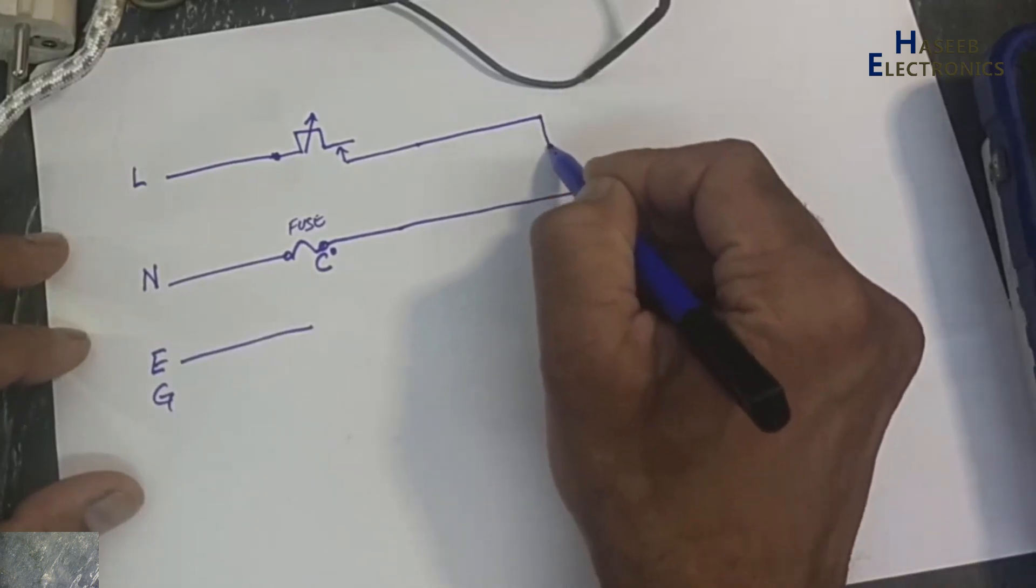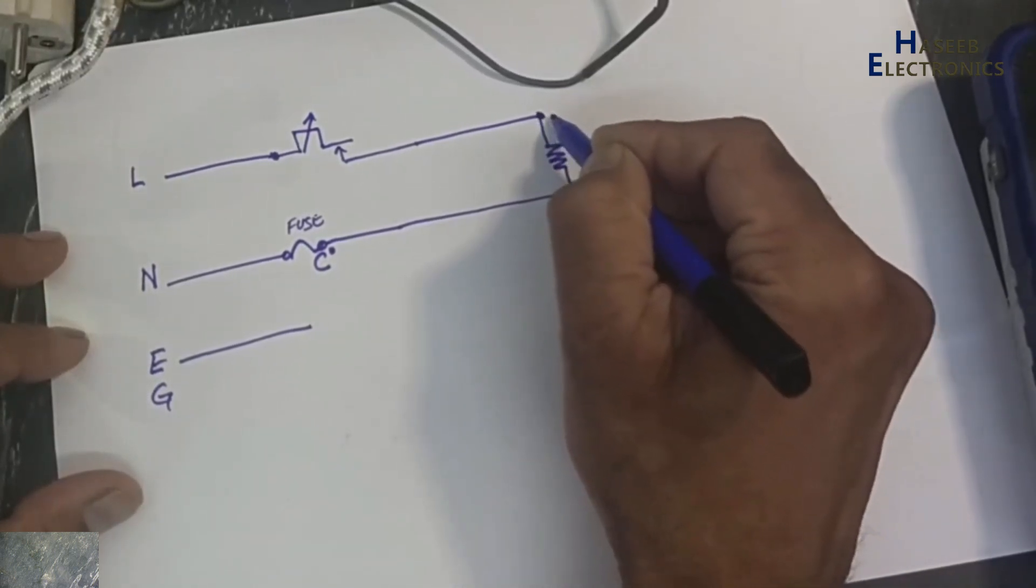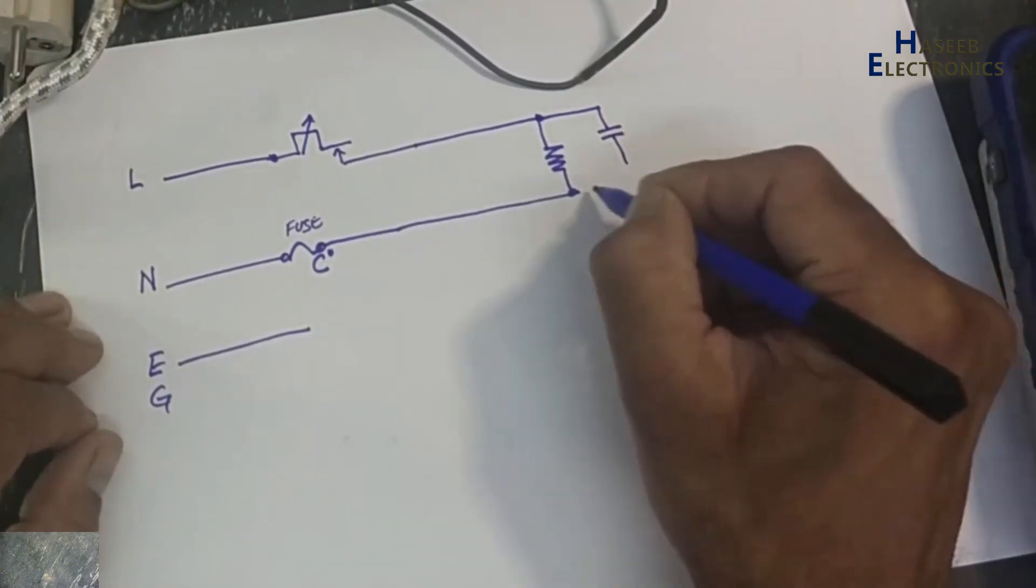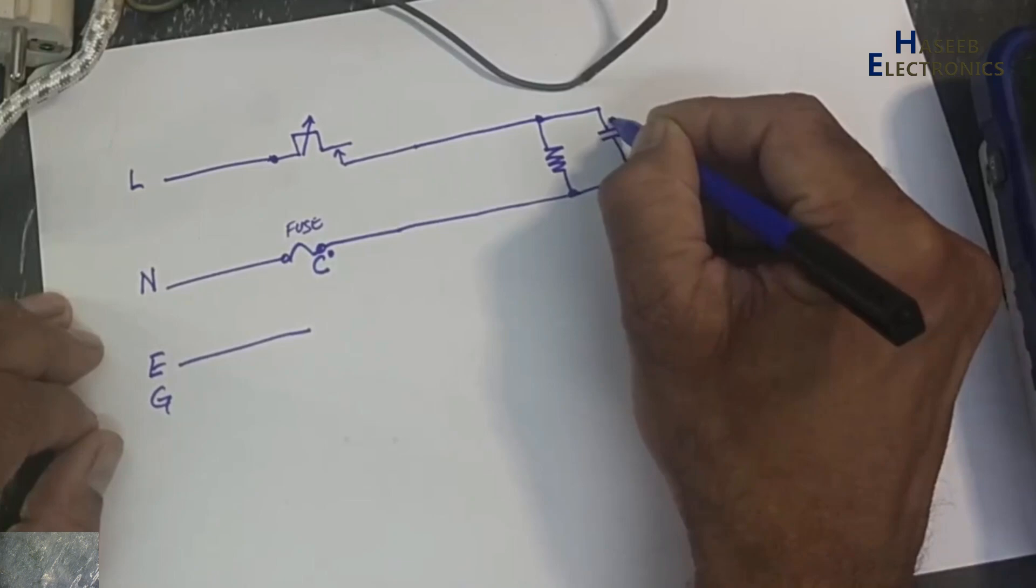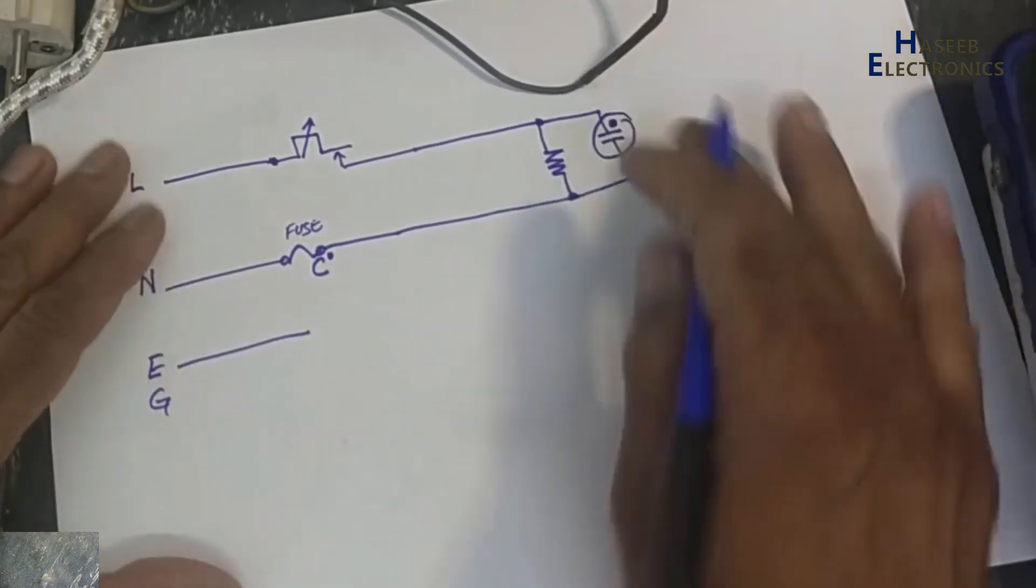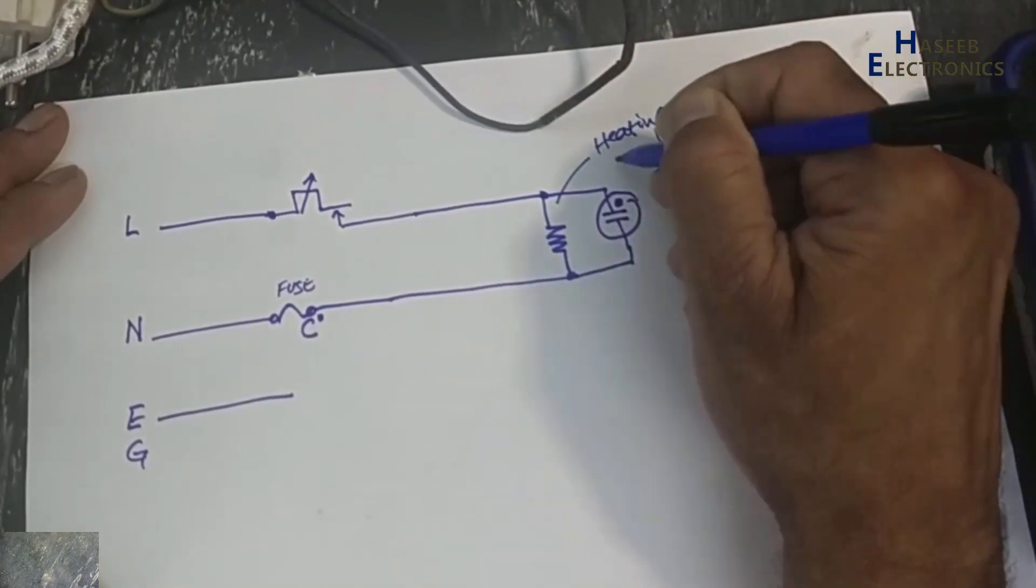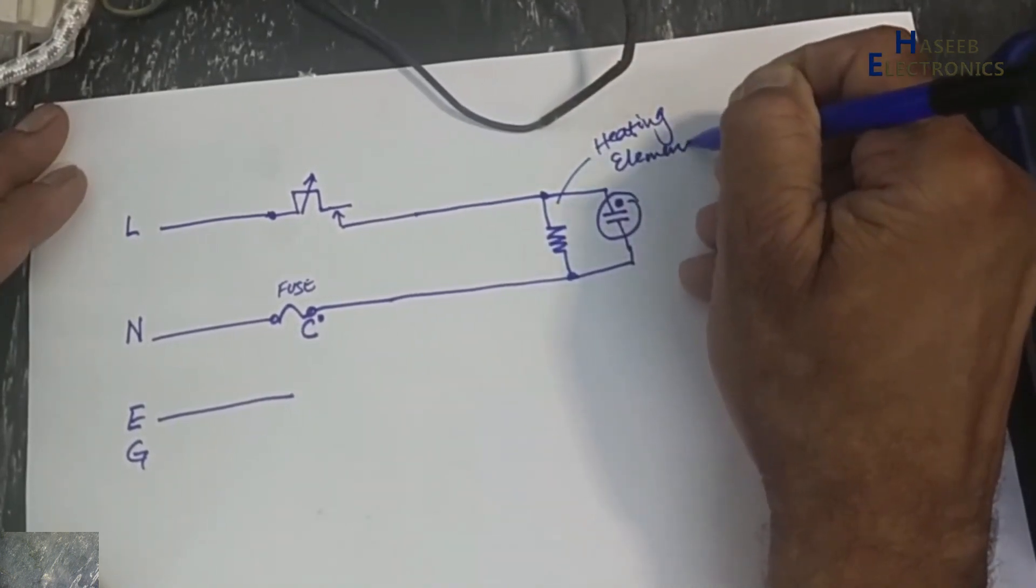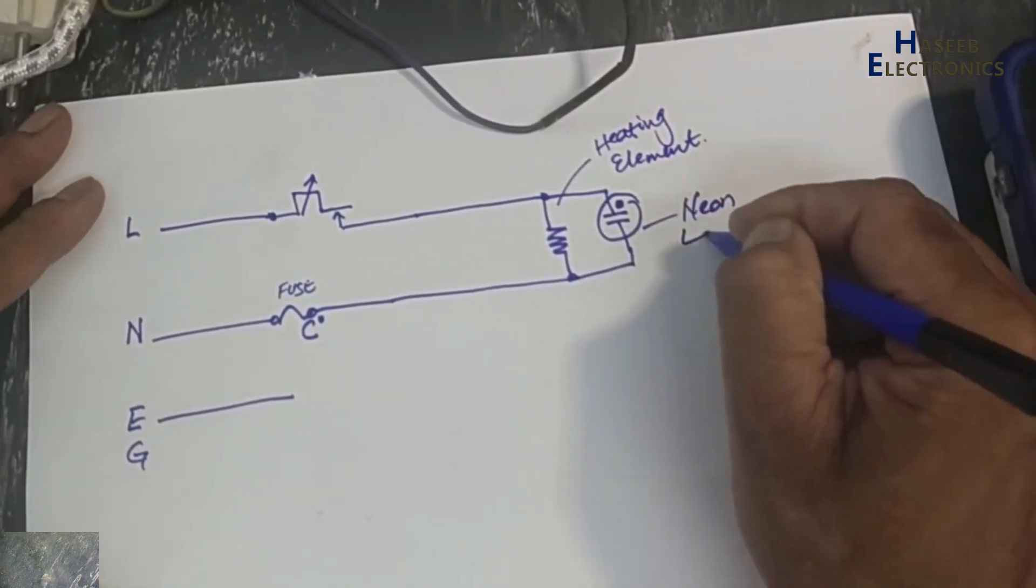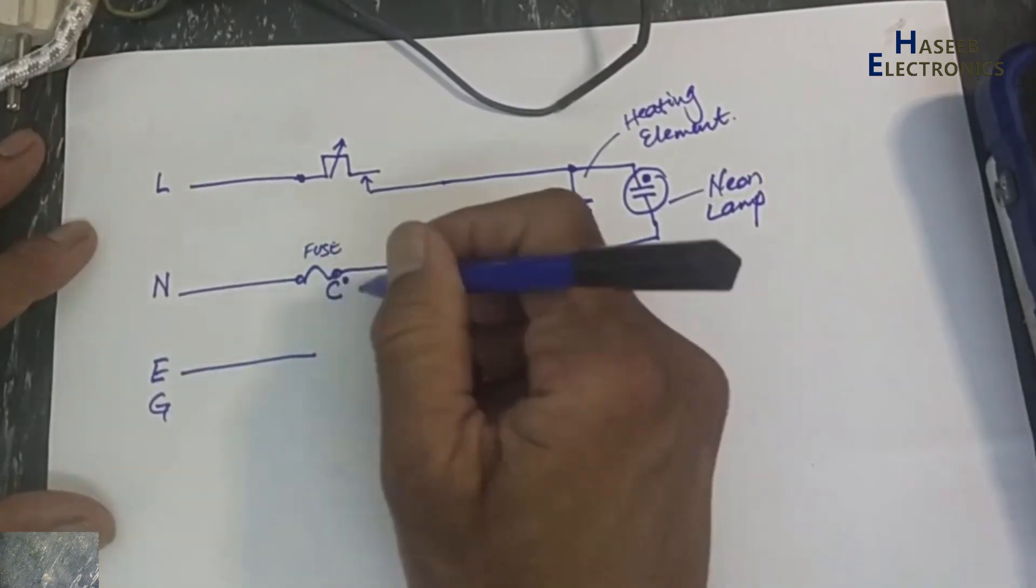Then these voltages are reaching to this heating element in parallel - heating element, neon lamp or indicator LED, and fuse.